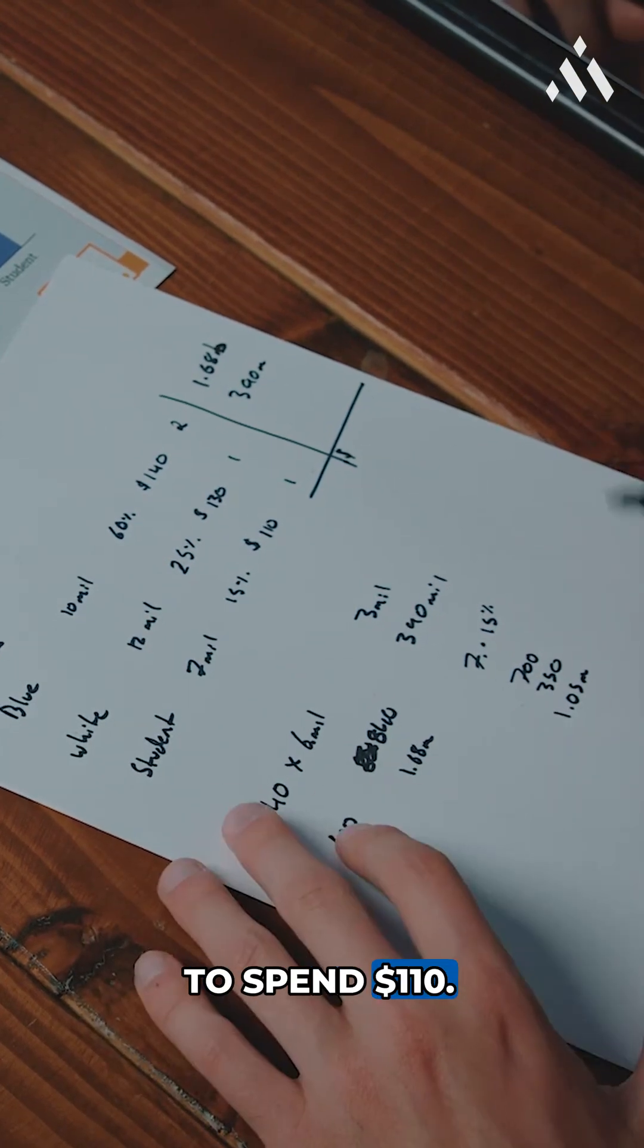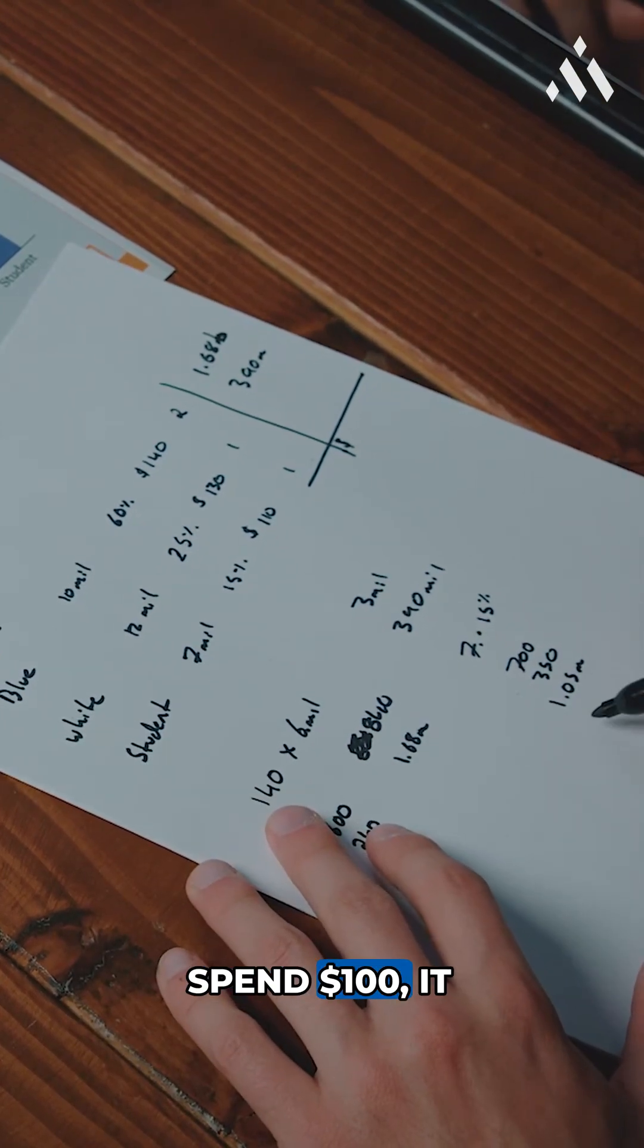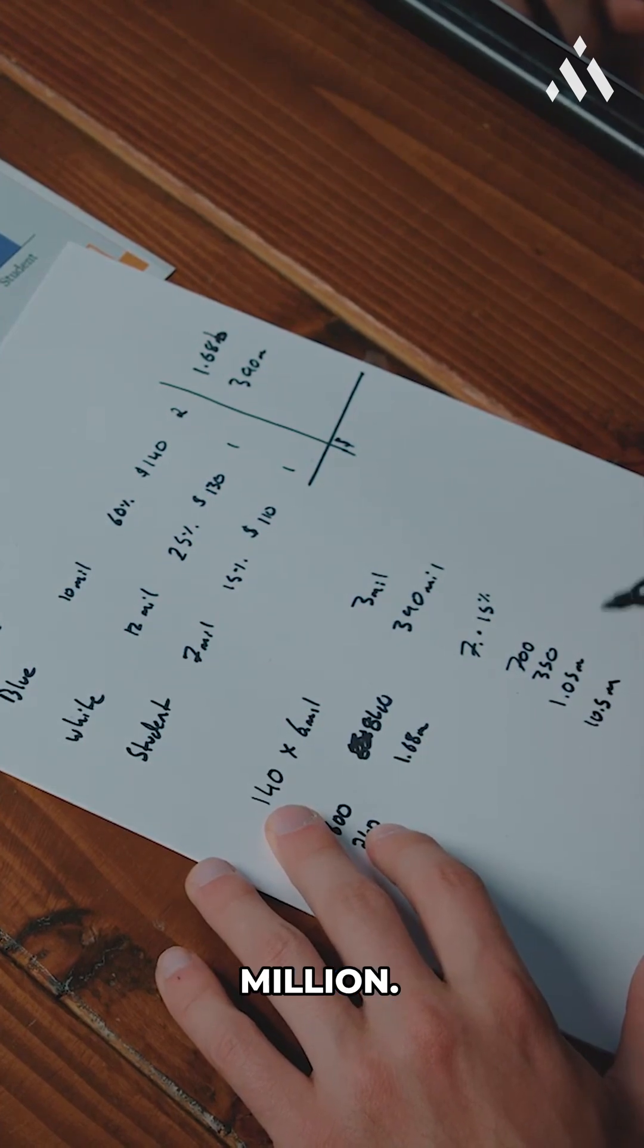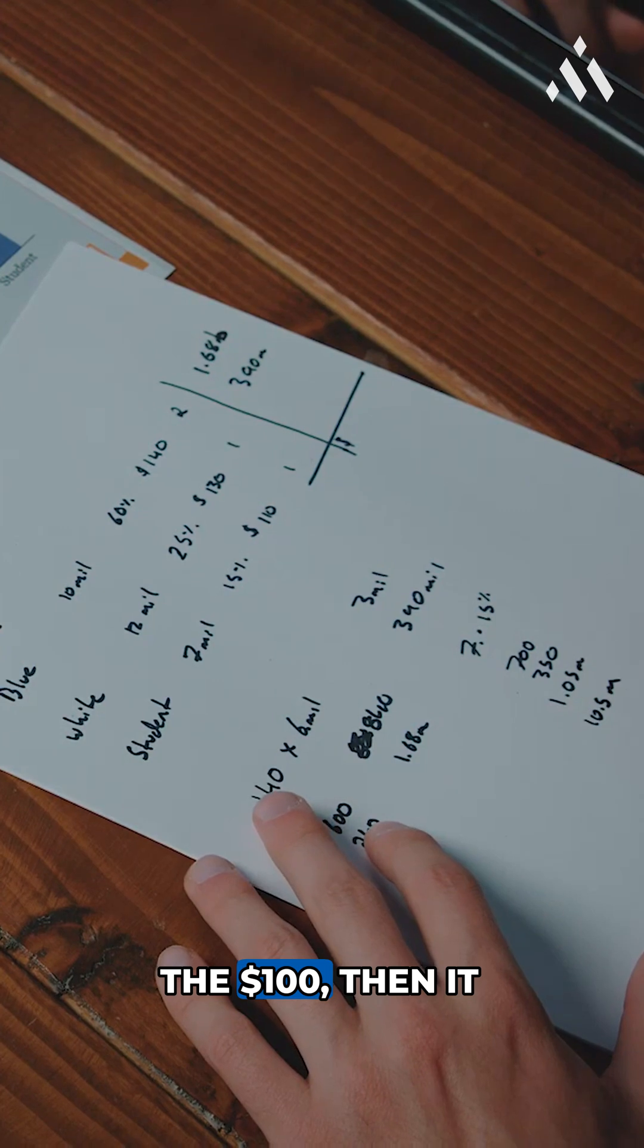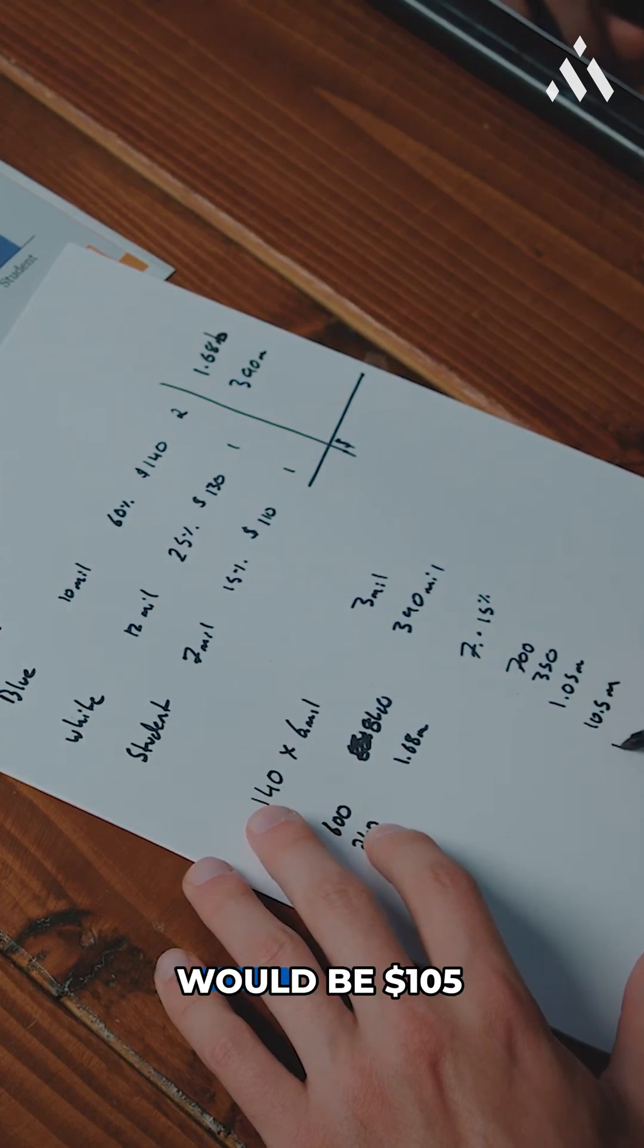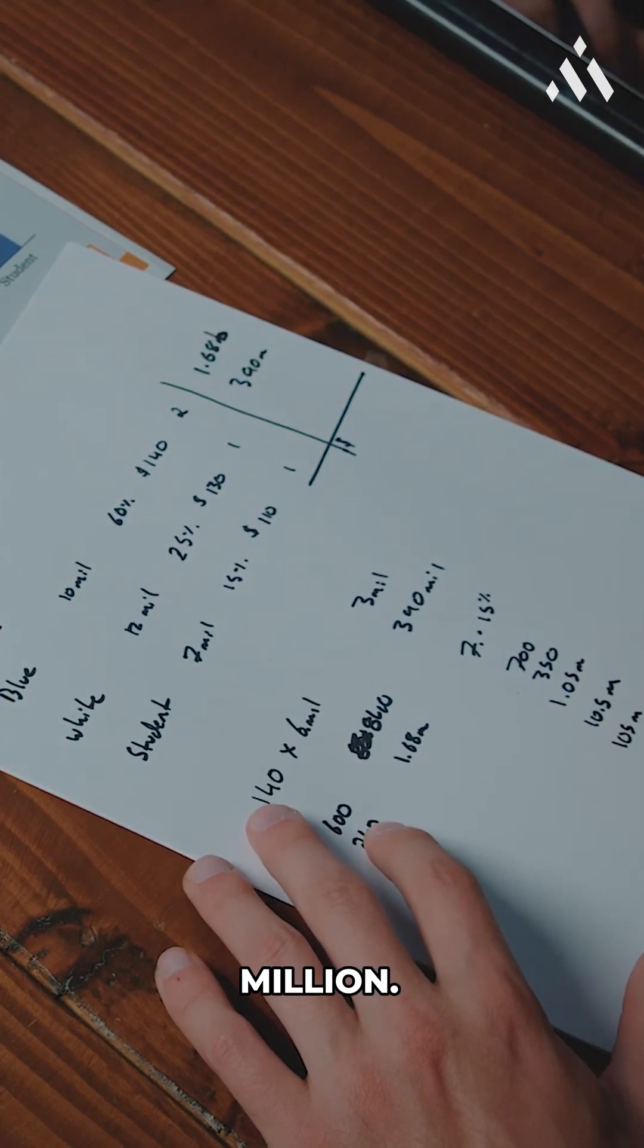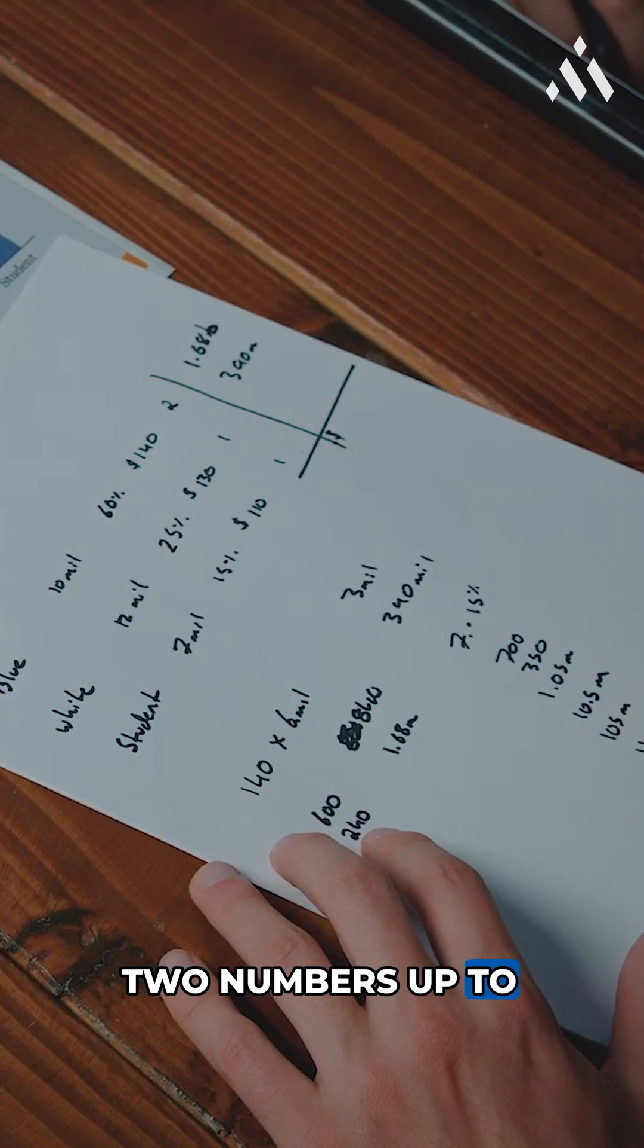Now, they're going to spend $110. So if they were to spend $100, it would be $105 million. And if they spend the extra $10, that would be $10.5 million. So we can add those two numbers up to $115.5 million.